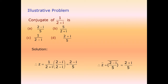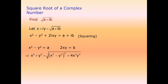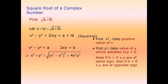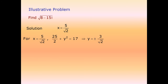To find the conjugate of expressions like 1/(2+iota), first express in standard form a + iota·b by multiplying and dividing by the conjugate (2 - iota). For square roots of complex numbers: let √(a + iota·b) = x + iota·y, square both sides, compare real and imaginary parts, use the standard identity to find x² and y², take the positive value of x, and choose y with the correct sign. The two square roots are x + iota·y and -(x + iota·y).